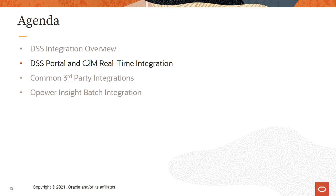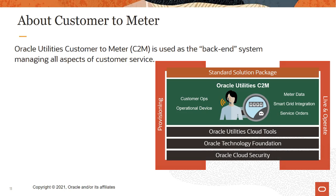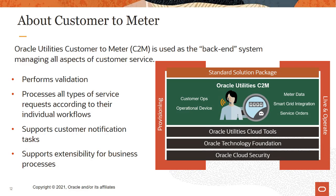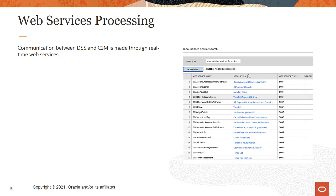Let's discuss the DSS portal and customer to meter, or C2M, real-time integration. Oracle Utilities customer to meter is used as the back-end system that manages all aspects of customer service for the utility. When integrated with Digital Self-Service Transactions, or DSST, C2M performs the validation, processes all types of service requests according to utility workflows, supports customer notification tasks, and supports the extensibility needed to align customer actions with business processes. Communication between DSS and C2M is made through real-time web services.